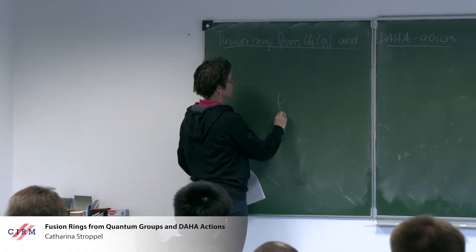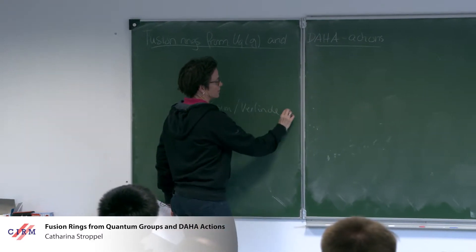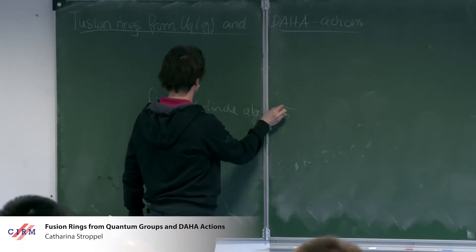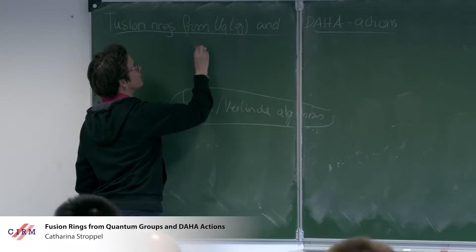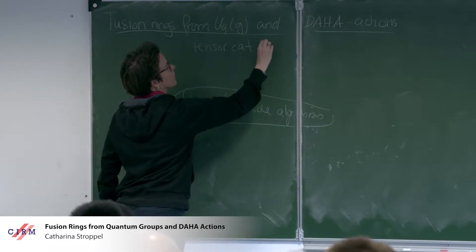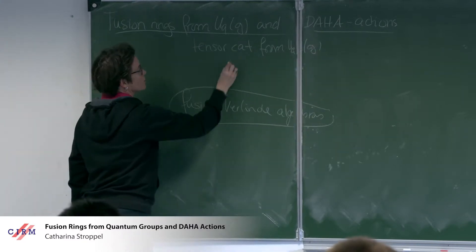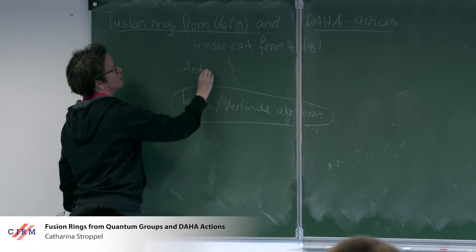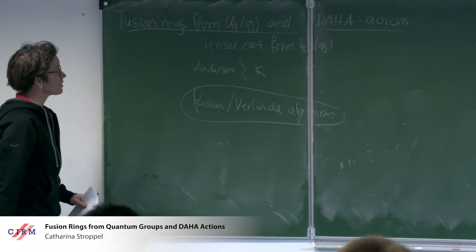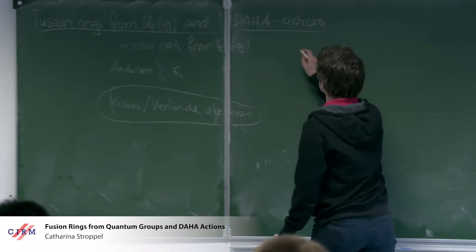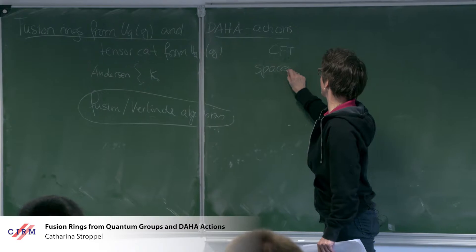I want to talk about fusion rings, or Verlinde algebras. In this talk, they will come from quantum groups, from certain kinds of categories from UQ(G). This goes back to a construction of Anderson. But you can also get them from very different aspects, for instance from conformal field theory, by looking at spaces of conformal blocks.